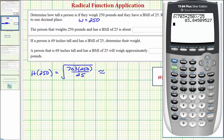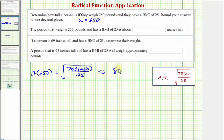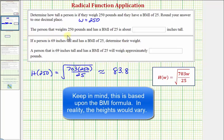The approximate height would be 83.8, since we're asked to round to one decimal place. This would be inches. So the person that weighs 250 pounds and has a BMI of 25 is 83.8 inches tall.